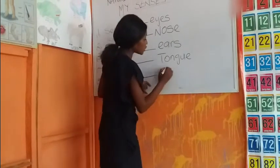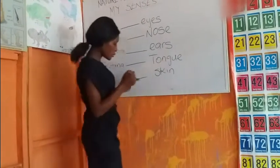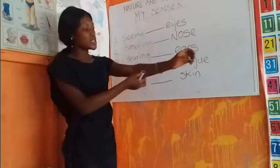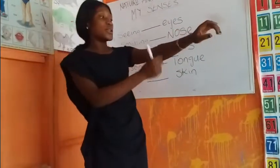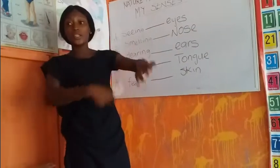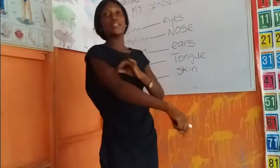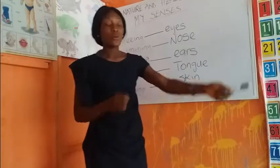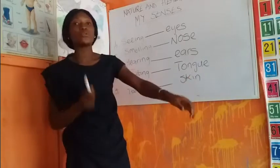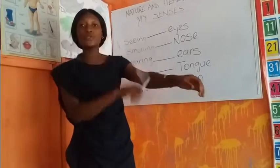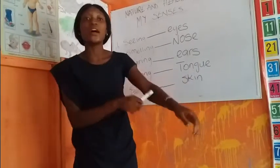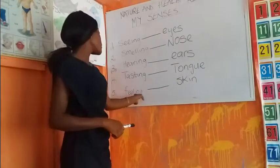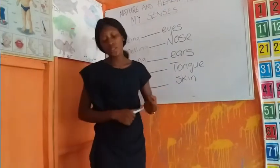The last sense is the sense of feeling, and we use our skin. We use our skin for feeling. This is your skin — that is what is covering your body. The skin is used for feeling; when I pinch you or spank you on your skin, you'll be able to feel the pain. So the skin is the organ for feeling.